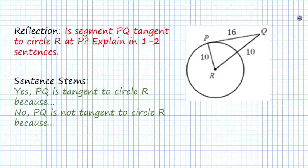For your reflection, we have this question: is the segment PQ tangent to the circle R at P? Explain it in one or two sentences. Remember, you may want to cite a theorem and perhaps verify this using the Pythagorean theorem. Go ahead and do this problem and let me know so I can stamp for your reflection today. Have a wonderful day — let me know if you have any questions.